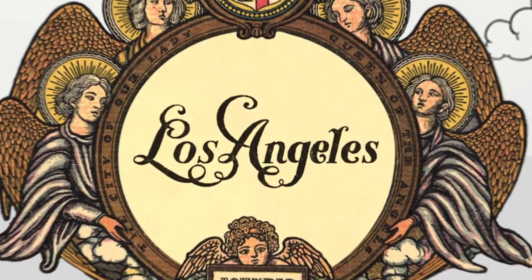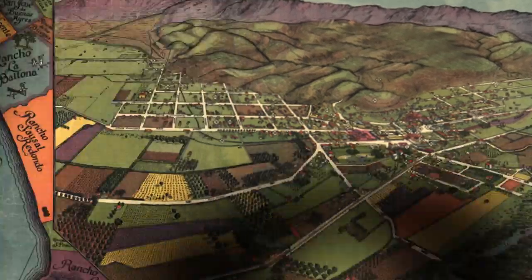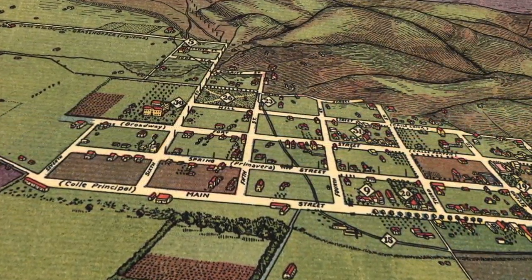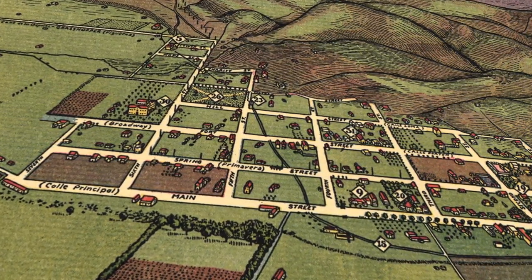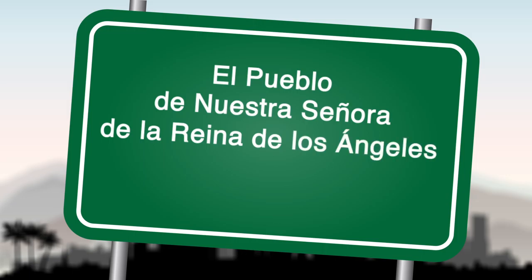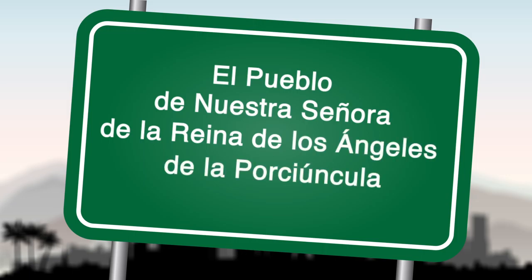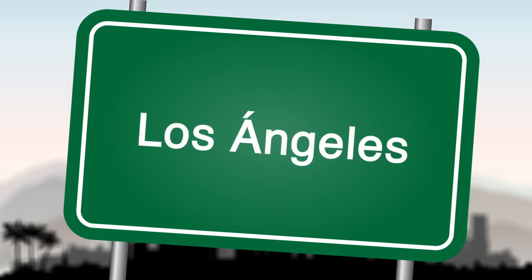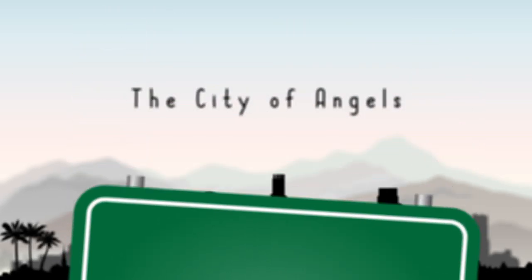The city of Los Angeles was founded in 1781 by a group called Los Pobladores — the people who came to found the city. A group that was almost entirely mestizo and mulatto, mixed race, much like Los Angeles is today. And they named the city El Pueblo de Nuestra Señora de la Reina de Los Angeles de la Porciúncula. That's a mouthful. So since then people have just used Los Angeles — the city of angels.